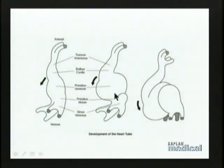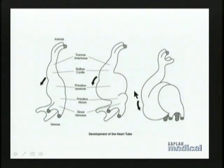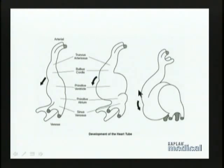The other thing happening as we go from picture to picture, in addition to the enlargement of the atrium and ventricle, is that this tube—originally straight, with the caudal end being the inflow and the cranial end being the outflow—is folding on itself. Viewed from the lateral side, by the time it finishes folding it has an S-shaped curve, with the upper ventricle coming down to the bottom and the lower atrium going up to the top. So originally the atrium was below the ventricle, and we end up with the atrium above the ventricle.